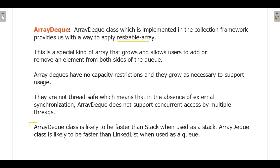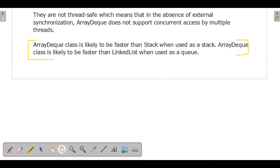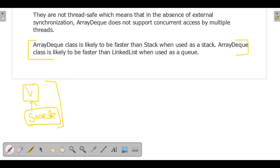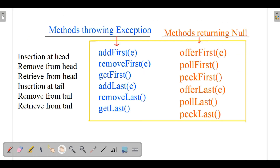ArrayDeque is not thread-safe, meaning that in the absence of external synchronization it does not support concurrent access by multiple threads. ArrayDeque is faster than Stack when used as a stack. This is because the Stack class implements the Vector class, which has a mechanism of thread synchronization, making it thread-safe. Since ArrayDeque does not have this synchronization overhead, it provides faster performance.